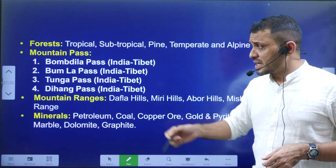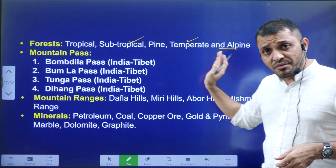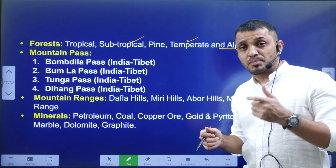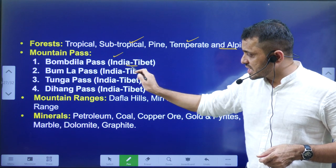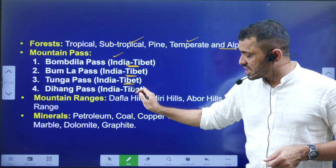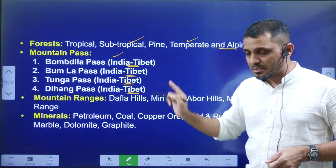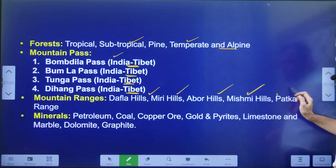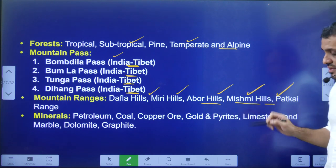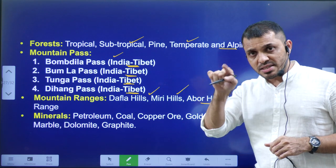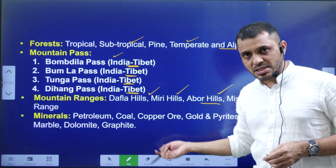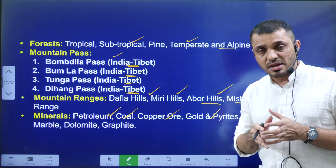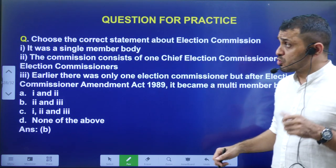Tribes living in Arunachal Pradesh include Abor, Apatani, Kumti, Monpa, Singpho, Kambanda, Mishmi, Nishi, and Wancho. The forests range from tropical to subtropical, temperate, and alpine, reflecting the diverse terrain. Important passes in Arunachal Pradesh include Bomdila Pass, Bumla Pass, Tunga Pass, and Dihang Pass — all along the India-Tibet border. Mountain ranges include Dafla Hills, Miri Hills, Abor Hills, Mishmi Hills, and the Patkai Range. Minerals found include petroleum, coal, copper, gold, and limestone.